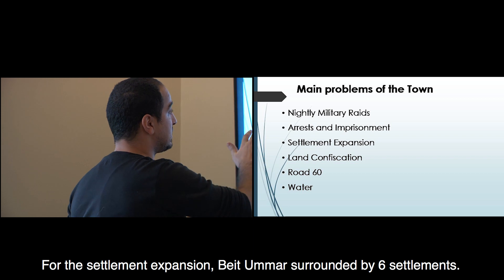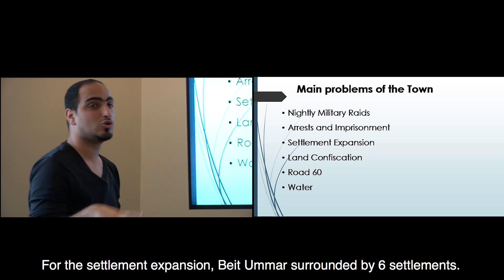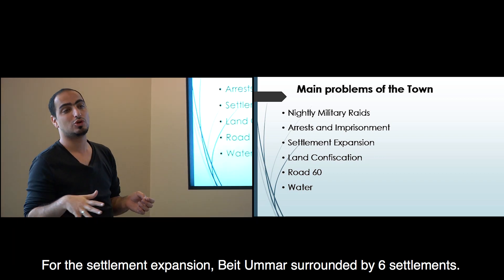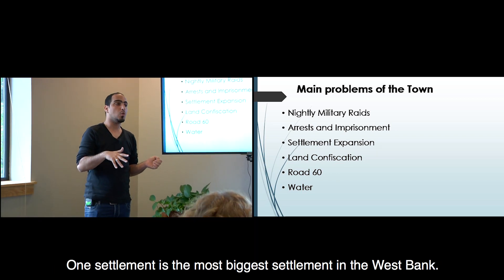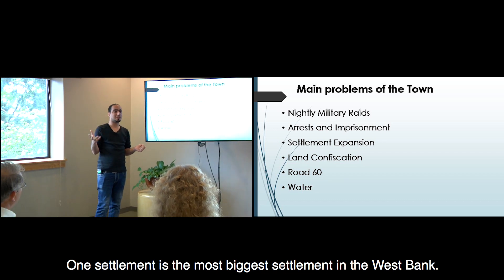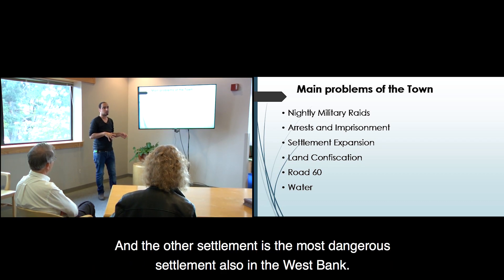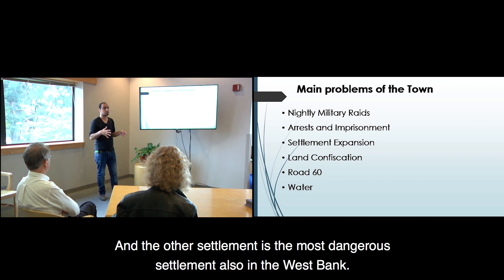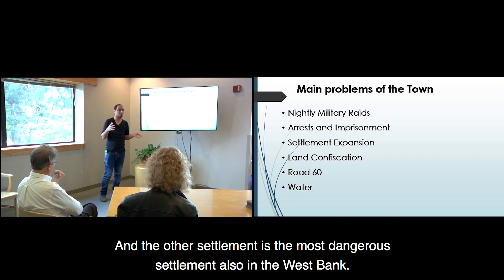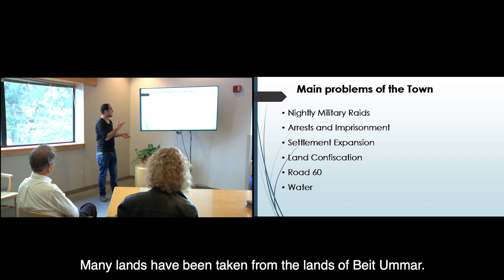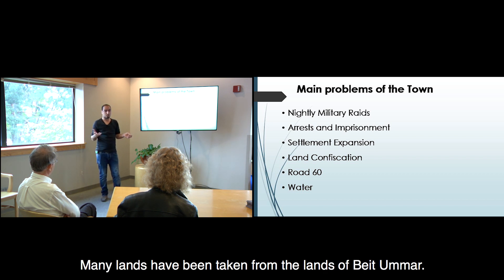For the settlement expansion: Beit Omar is surrounded by six settlements. One is the largest settlement in the West Bank, and another is the most dangerous settlement in the West Bank. Many lands have been confiscated from Beit Omar.